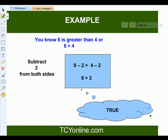Now let's understand this example where it says that 8 is greater than 4. And if we subtract 2 on both sides, we still get 6 greater than 2, which is absolutely true.